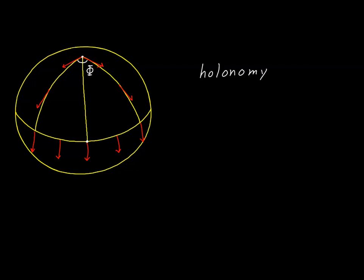It is possible to quantify this effect by means of a very remarkable theorem known as the Gauss-Bonnet theorem. What this theorem says is that this angle phi is equal to a physical integral which involves the curvature of the surface times the area element, integrated over the entire physical domain. The physical domain is defined as the area bordered by the path we use to complete the loop. Proving this theorem is beyond the scope of what we're doing here, but we can at least illustrate how it works.